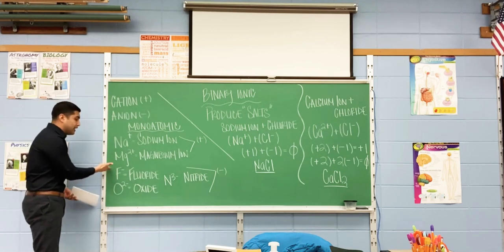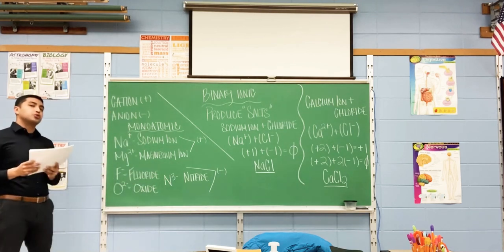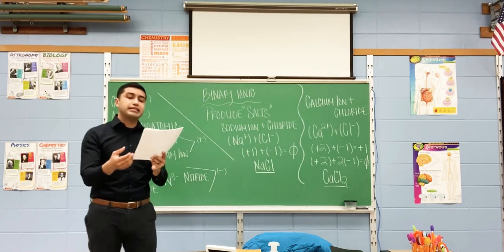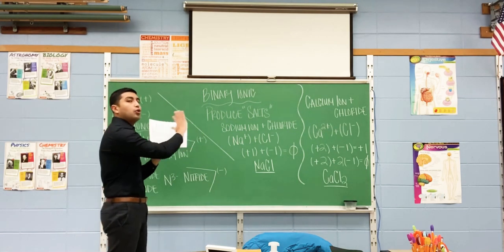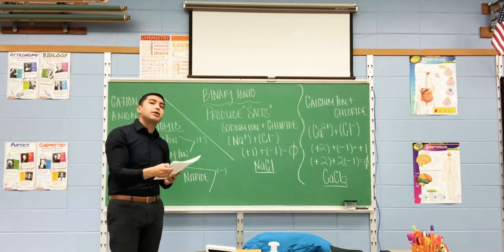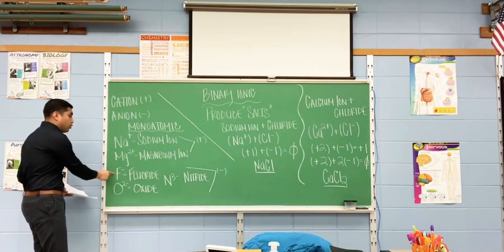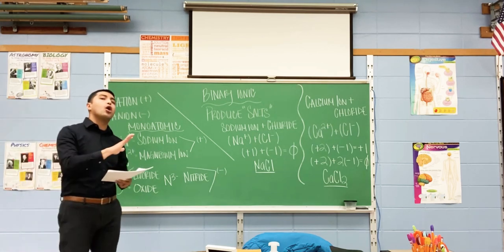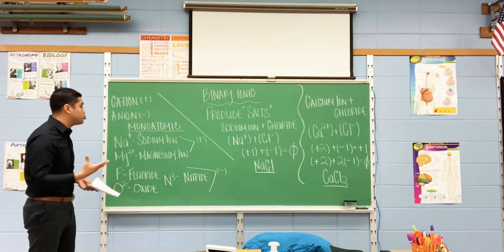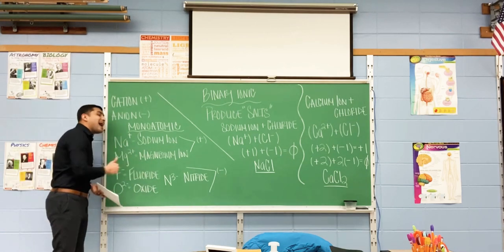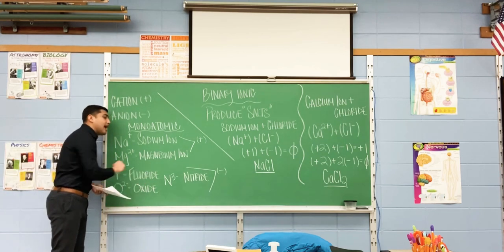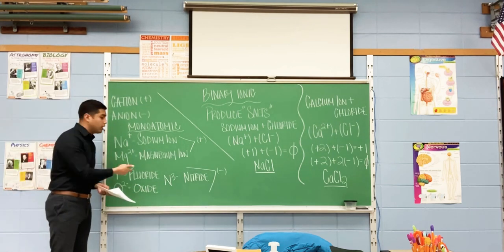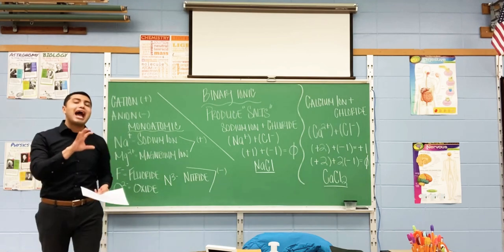Now let's work with anions — my negative ones. I have three examples. Let's look at F, which is fluorine. Locate fluorine on the periodic table. You'll notice it is in row number 17, all the way to the right — there's a 17 at the top. Fluorine carries a charge of negative one. If fluorine is negative and it's an anion, my rule is different. All negative ions, all anions — you drop the suffix and you add -IDE at the end. So fluorine, when naming ions, is called fluoride. You add -IDE at the end.